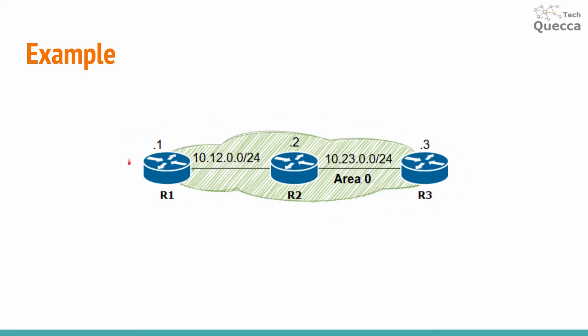For the configuration example for this topic, I'm going to use a small topology where I have three routers and one OSPF area — area zero, also known as the backbone area. Before we move on to configuration, I would like to ask you to subscribe to my channel with the notification bell on.